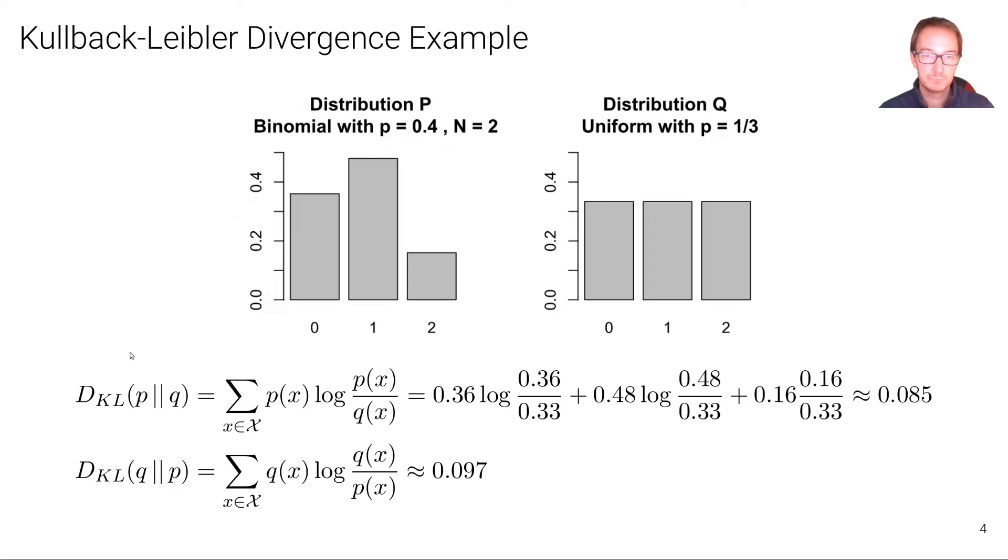Now we can numerically calculate the value of the Kullback-Leibler divergence. So what we have to do is we have to do the summation over the probability times logarithm p over q. And so here, this will amount to the following: we'll have 0.36, this value times log 0.36, so again p here, over 0.33.